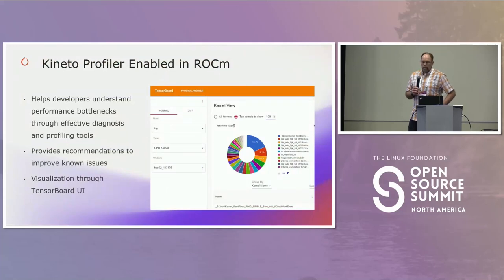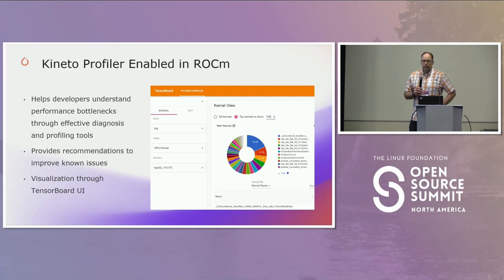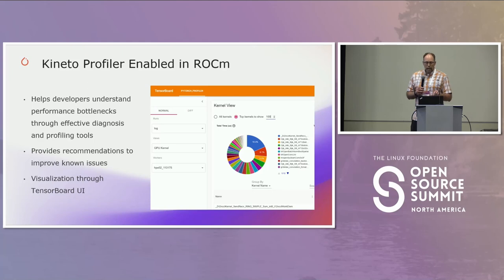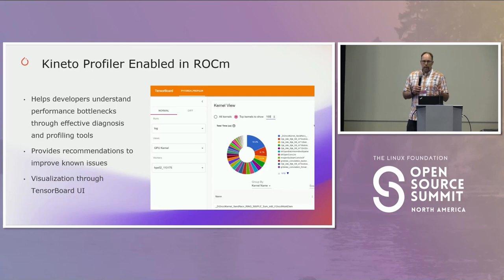Another interesting tool is the Kineto profiler. It uses the core ROCprof component within ROCtracer to abstract information from the GPU, then plugs right into TensorBoard. So you can use the familiar tools you use today to get a performance perspective on what's happening in the kernel — seeing memory transfers from CPU to GPU or how long different kernel components take.